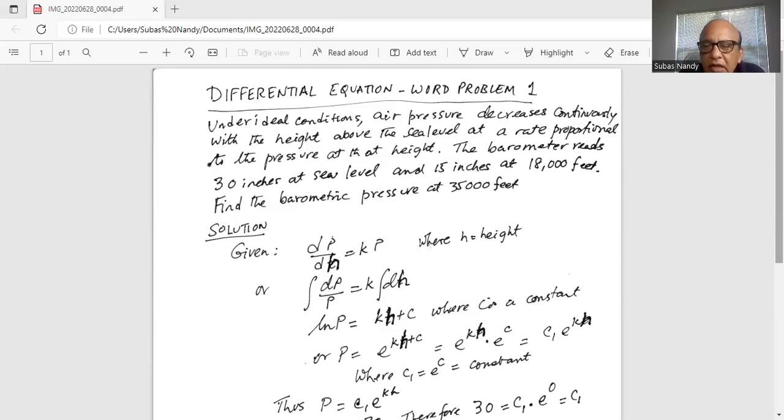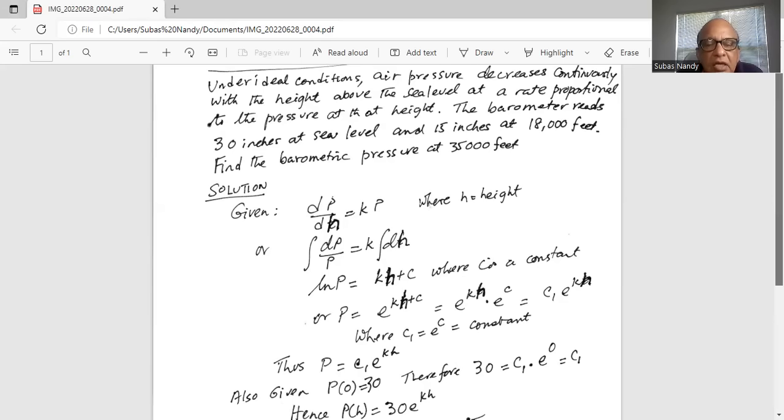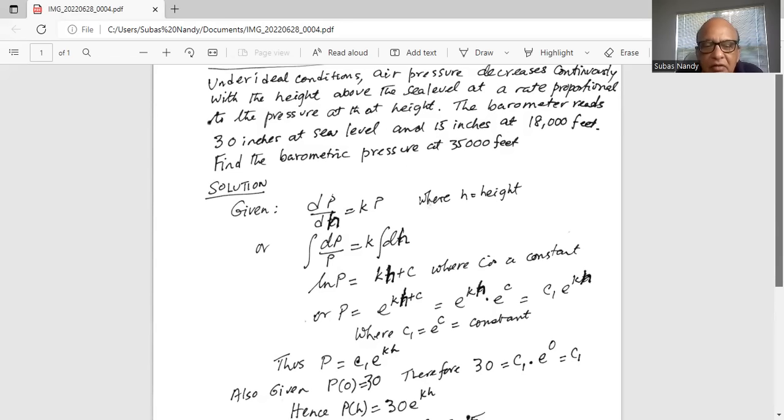Now we can use the definition of natural logarithm to get p is equal to e to the kh plus c, which we can further separate into e to the kh multiplied by e to the c, which can be further simplified equal to c1 times e to the kh. c1 is the natural number raised to the power of c, which is a constant. Thus, we can write the pressure equation as c1 times e to the kh.